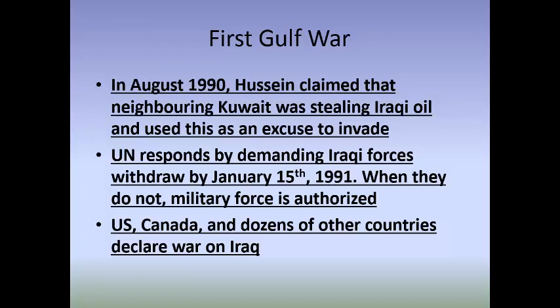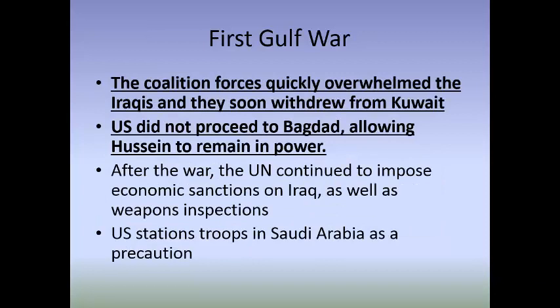Along with the US and dozens of other countries, Canada declared war on Iraq and was involved in this conflict. The coalition forces quickly overwhelmed the Iraqis, and they soon withdrew from Kuwait. The US did not proceed to Baghdad, however, which allowed Hussein to remain in power. The UN's mandate was not to remove Hussein - the violation of international law was the invasion of Kuwait, so all they wanted was for Iraqi forces to withdraw.